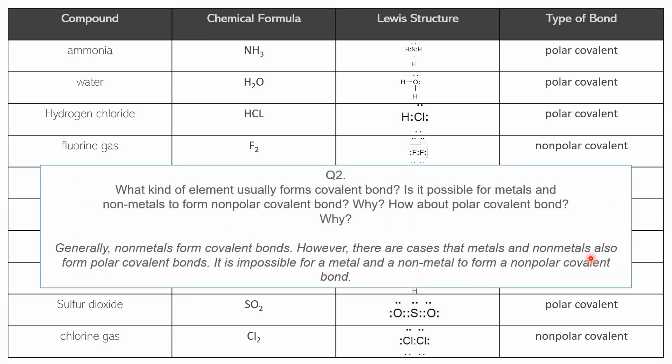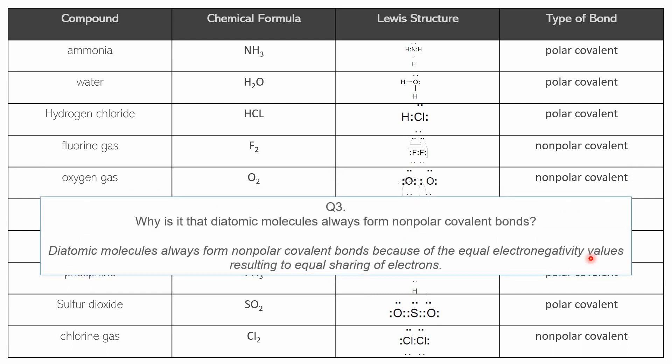For question two: generally, non-metals form covalent bonds. However, there are cases when metals and non-metals can form polar covalent bonds. It is impossible for a metal and a non-metal to form a non-polar covalent bond — when a metal is involved in covalent bonding, it will always be polar covalent, never non-polar. Metals can also bond through ionic bonding.